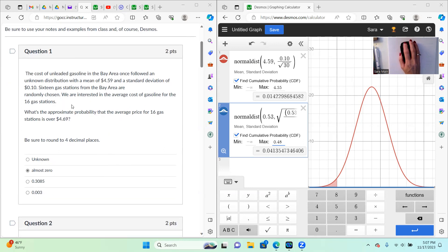First question says, the cost of unleaded gas, it's giving me a standard deviation and mean, and it says we are interested in the average cost of gasoline for the 16 gas stations. What's the approximate probability that the average price for 16 gas stations is over 469? And several of you said almost zero. It's actually unknown, and that is because we cannot use the central limit theorem because there's only 16 gas stations. You have to have 30 or more, or I have to have told you that it comes from a normal distribution, which we don't know that.